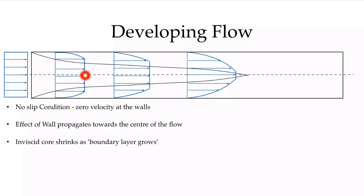The region in between where the effect of the wall is not yet felt — where we see a straight line — can be called the inviscid core. It's inviscid because there's no velocity gradient here. The shear stress is equal to the viscosity times the derivative of the velocity, and that derivative with respect to radius is zero when we have a constant. As this affected region is growing, the inviscid core is shrinking until there is no inviscid core at the end of the developing flow region.